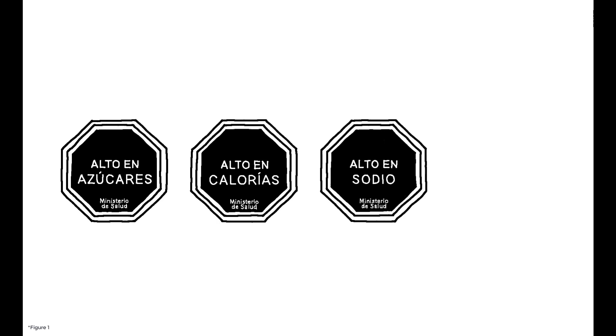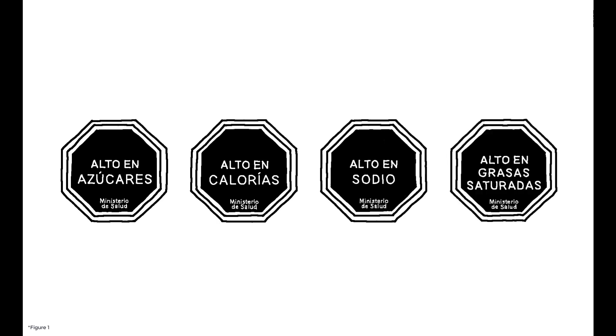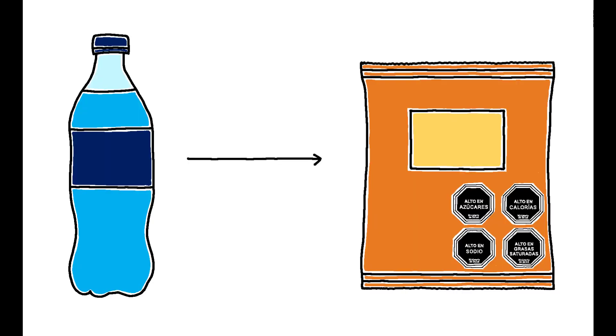This established threshold values for sugar, calories, sodium, and saturated fat concentration, and required that suppliers place a warning label on the front of their product for each threshold surpassed. This means a single product could have anywhere from zero to four labels.